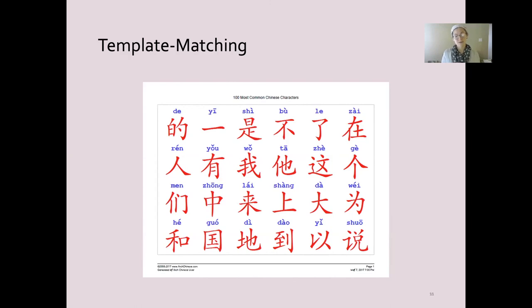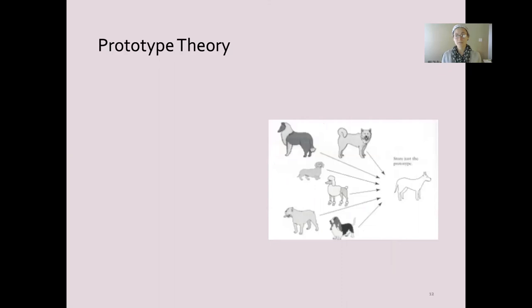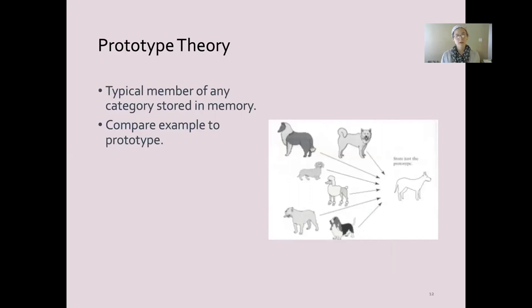Maybe there's a more efficient way of storing things and that's what prototype theory helps us understand. Prototype theory says that we recognize information, we recognize a member of a category based on how similar it is to the typical member of any category. We compare every example to the prototype.